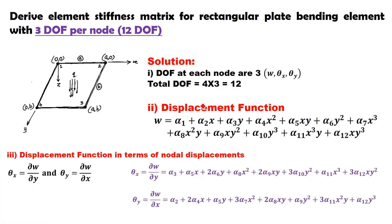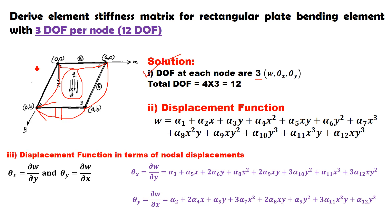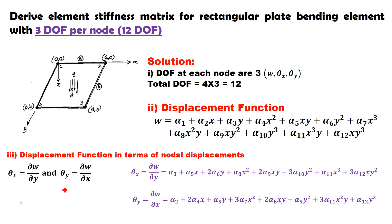The first step is to identify the degrees of freedom. Since it is a bending element subjected to transverse load Q on the top surface, the element undergoes bending deformation with vertical deflection and two rotations — one about the X axis and one about the Y axis. At each node there are 3 degrees of freedom: W, rotation about X (θx), and rotation about Y (θy). With 4 nodes, total DOF becomes 12 — hence it is called a 12 DOF plate bending element.